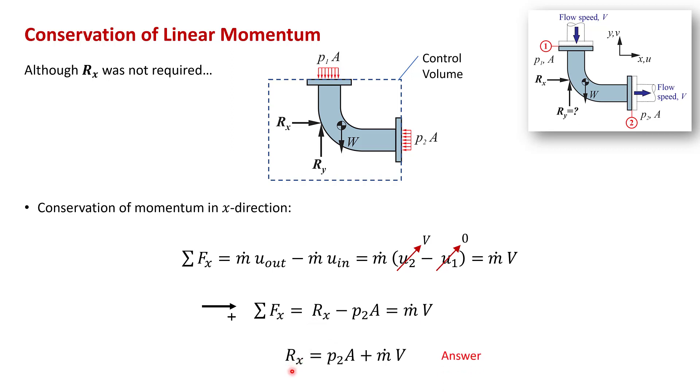And that gives rx equal to p2A plus m dot v. Again, it's worth taking a few seconds to do a sanity check on this. You can see that if you were to increase the pressure here, it would require a larger positive value of rx to hold this elbow in place. So it makes sense that this is a positive term. And what's happening in terms of momentum is you're taking y momentum and you've got no x momentum coming in. And you've got a lot of x momentum going out. So you're accelerating the flow in the x direction. And that's going to take a force m dot v in the x direction. So it makes sense, I think, that that term is positive.